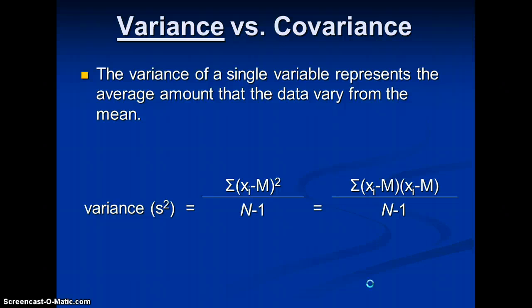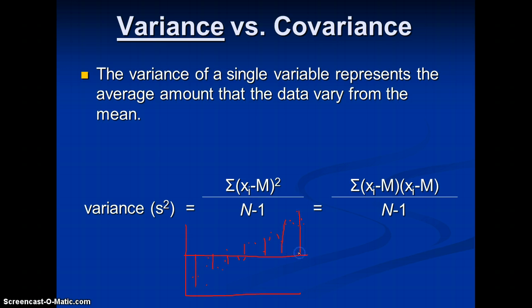Let's talk about variance versus covariance. The variance of a single variable represents the average amount that the data vary from the mean. If we plot this, we can measure the distances from the mean for each individual data point — those deviations from the mean — across all observed values.